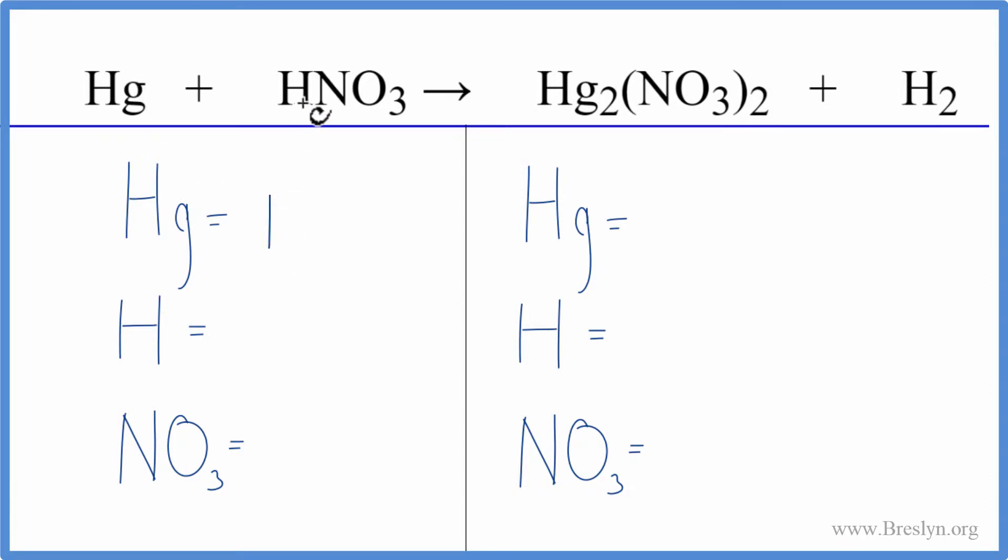We have one mercury and then one hydrogen here. And then this nitrate, we're going to use a little trick to make this easier. We have a nitrate here and a nitrate here. So the NO3, that stays together. It's a polyatomic ion. We're going to count that as just one item. So I have one nitrate. That makes balancing a lot easier.